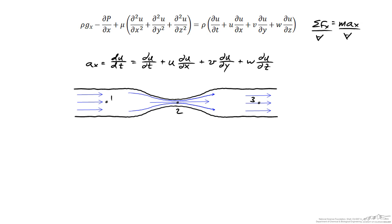Conversely, in the expanding region, although u is positive, ∂u/∂x is less than zero — a negative quantity — so the fluid is slowing down. The convective acceleration term is less than zero, meaning the acceleration would be directed to the left in that highlighted region.